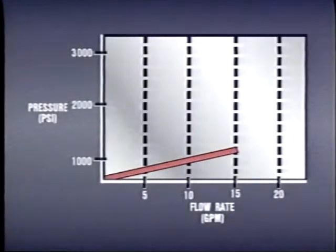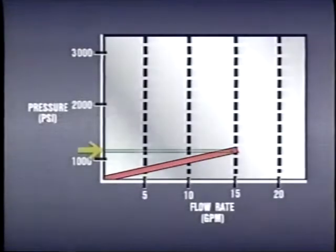Both cracking pressure and override are shown on this graph. The valve starts passing flow at about 800 PSI, then increases as pressure rises. If system pressure rises above 1,000 PSI, flow through the valve will increase to more than 10 GPM.